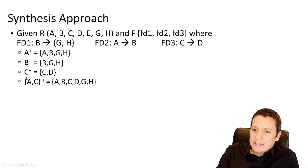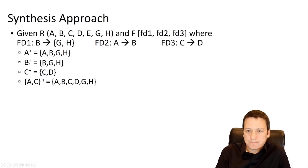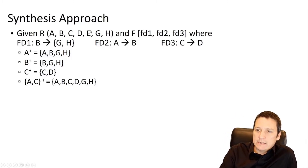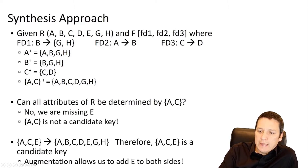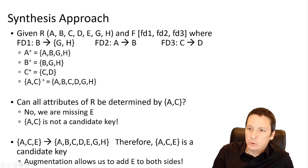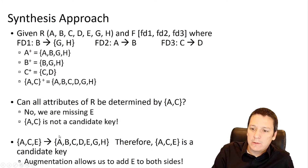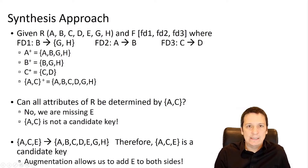The closure of AC is A B C D G H. It won't do any good to add E or B to our determinant because AC already knows everything B knows, and the only attribute we're missing is E. Through the augmentation axiom we can add E to both sides. At this point our dependent includes every attribute in the relation, so ACE functionally determines A B C D E G H — therefore ACE is a candidate key.